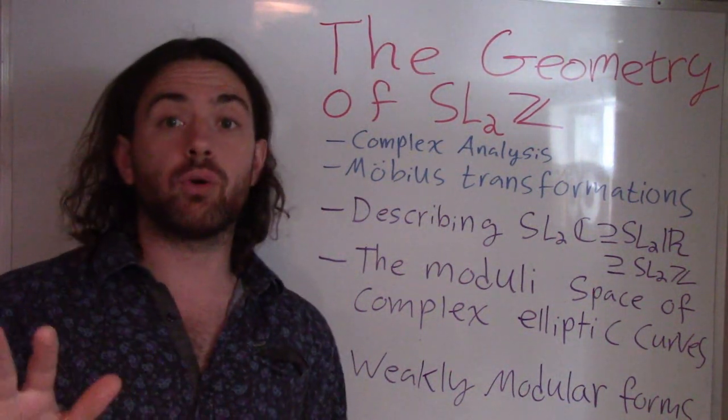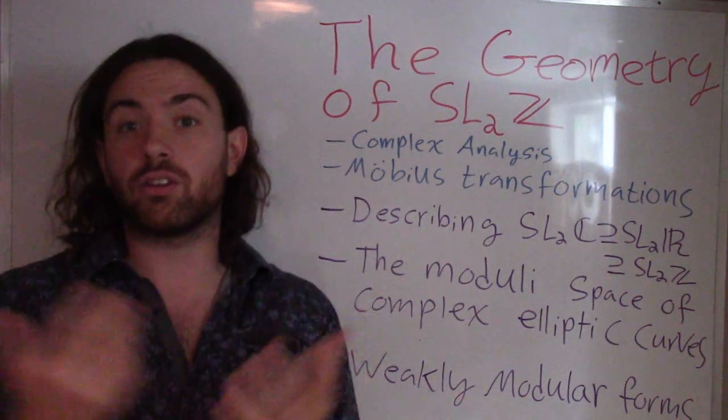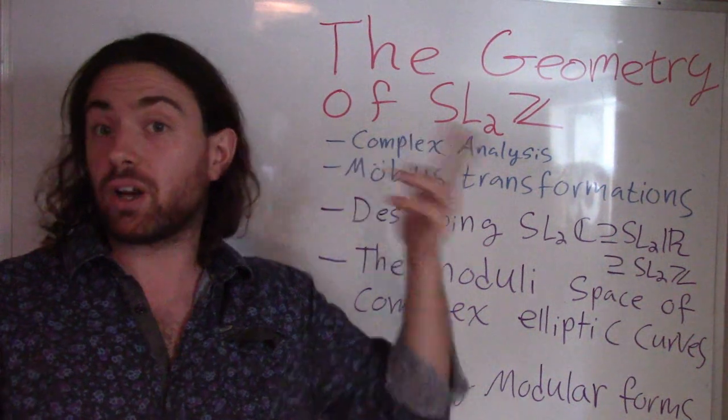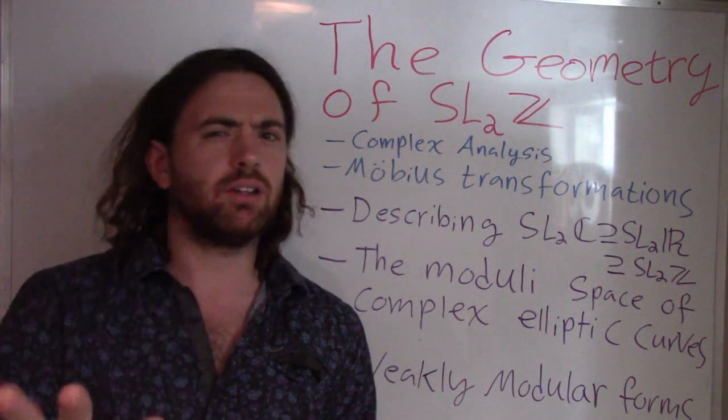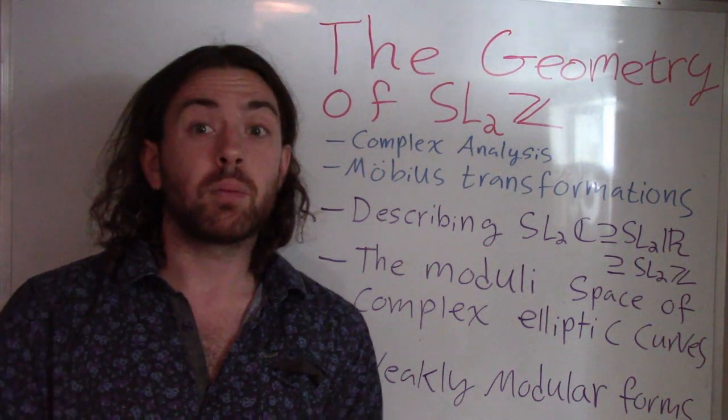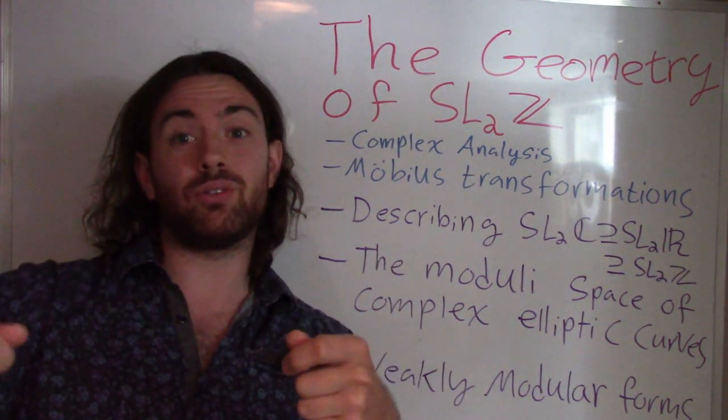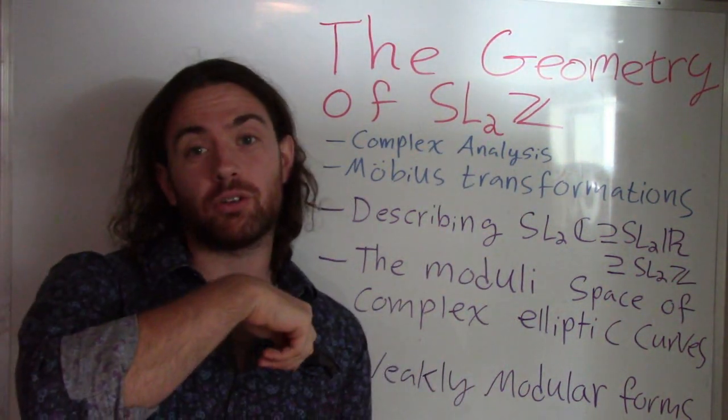So that's going to be the focus of the second video, where we're going to be able to prove something that I think is just really neat, the fact that SL2Z is finitely generated, and describe what those generators are. Now that in itself isn't super interesting, but the way in which we do it is by exploiting how SL2Z acts on this geometric space, and sort of feeding that information back into the group.